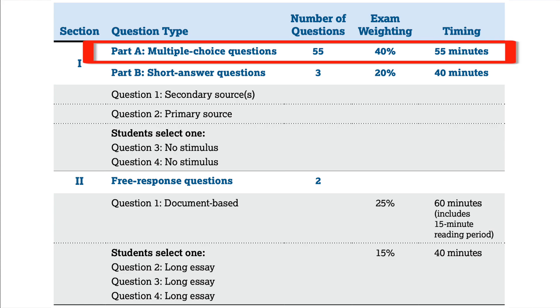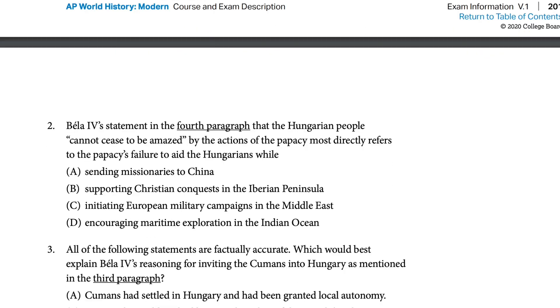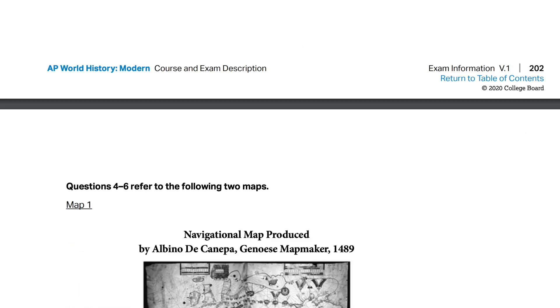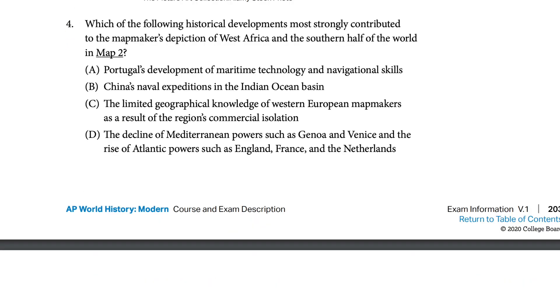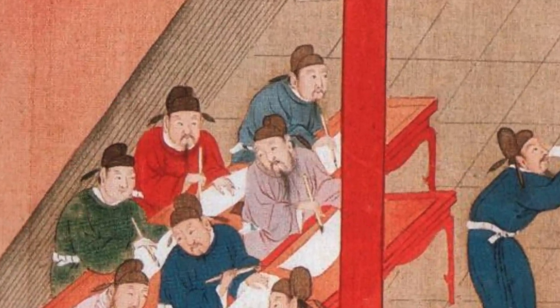Now once you get in there, the test breaks down like this. Part A is 55 stimulus-based multiple-choice questions in 55 minutes. But there will only be around 20 stimuli, and each of those stimuli will have two to four questions going along with it. So you don't have to read 55 excerpts and answer 55 questions all in 55 minutes. Don't get bogged down on a single stimulus-based multiple-choice question.